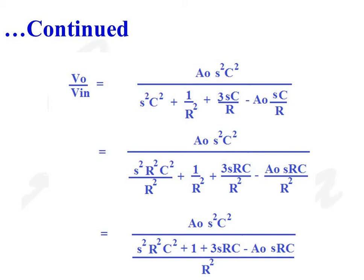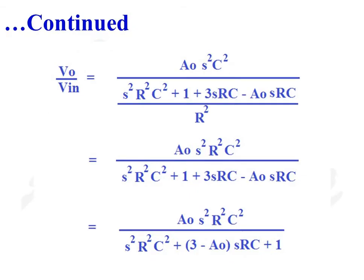So V0/VIN = A0·S²C² / [(S²R²C² + 1 + 3SRC − A0·SRC) / R²]. After rearranging terms, we get V0/VIN = A0·S²R²C² / [S²R²C² + (3 − A0)·SRC + 1].